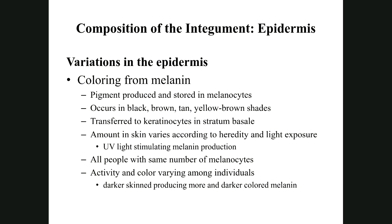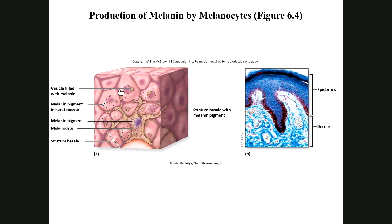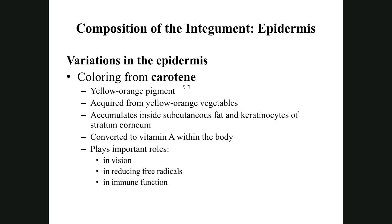Besides melanin, the other skin pigment is carotene — not keratin. Keratin is that waterproof protein; carotene is a yellow-orange pigment that we have to eat as vitamin A from yellow and orange plants like carrots. It accumulates in the subcutaneous fat and in the keratinocytes. If you inherit the lightest color melanin and have more carotene, you will have a more reddish skin tone and might have red or orange hair.